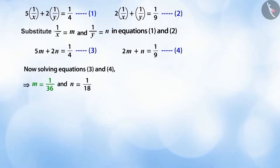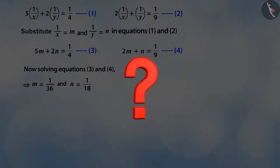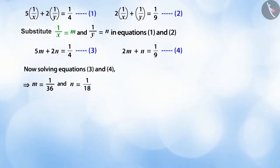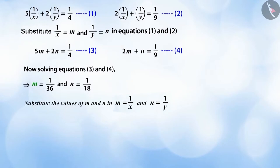When we solve the pair of equations, we get the value of m as 1/36 and n as 1/18. But can you tell what do we need to do in order to find the values of x and y? Because we assumed 1/x as m and 1/y as n. So now when we replace 1/x as m and 1/y as n.